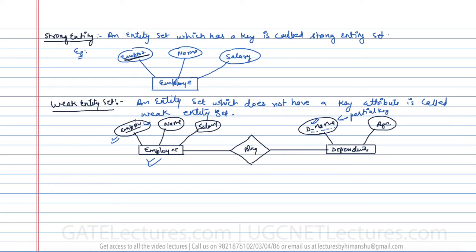If there is a father and he has a son, daughter, or wife, those family members are dependents on him. Given an employee number you can easily and uniquely identify all the dependents, but given only the dependent names you cannot uniquely identify them separately. So these dependents depend on the employee entity, which is why this entity is a weak entity, and weak entities are generally denoted with a double rectangle.